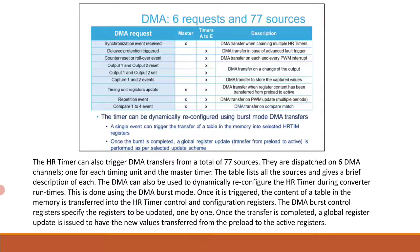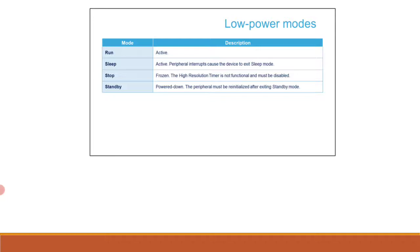In low power modes, the HR timer can be active only in run and sleep modes. In stop and standby modes, the HR timer must be disabled. In standby mode it has to be re-initialized because it enters power down mode.